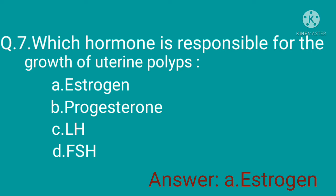FSH means follicle-stimulating hormone; it acts on the ovaries to make follicles and eggs grow. LH means luteinizing hormone, which plays an important role in sexual development and functioning, helps control the menstrual cycle, and triggers the release of an egg from the ovary.